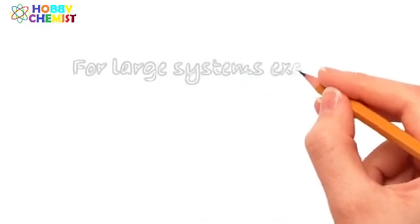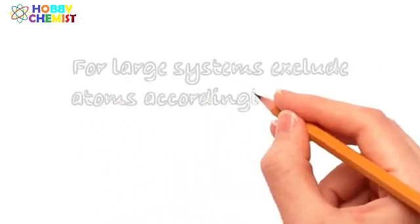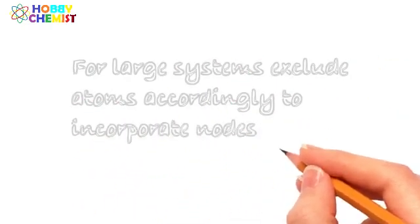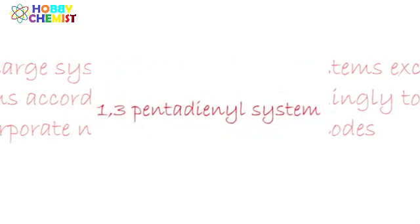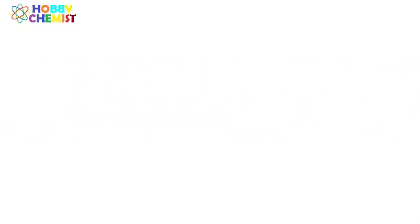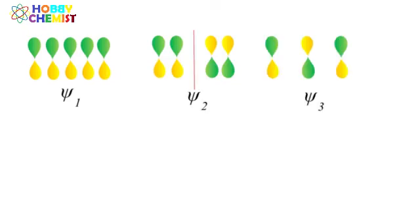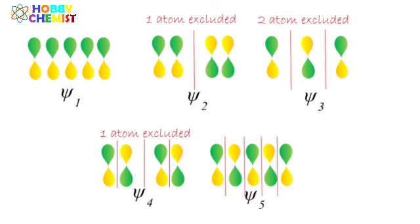For bigger systems, we may have to exclude more atoms for the molecular orbitals to be created. For example, for pentadienal systems, we have to exclude one atom for Psi-2 and Psi-4 and two atoms for Psi-3.